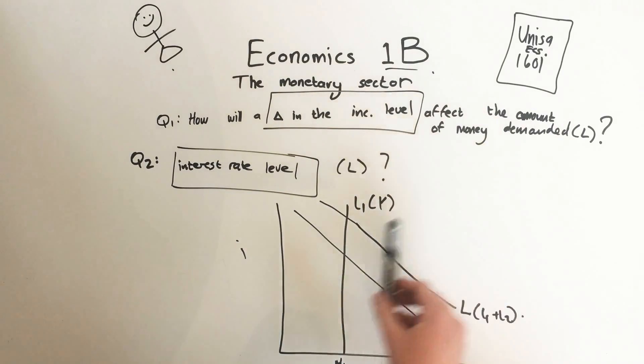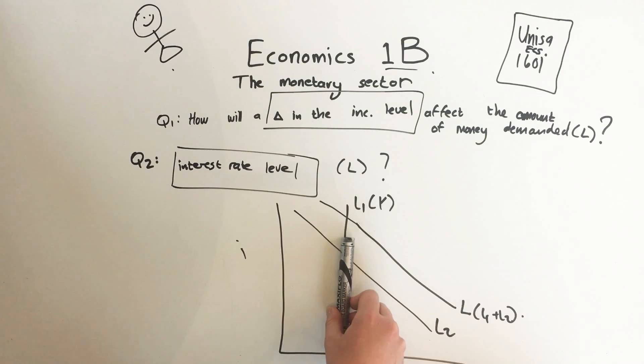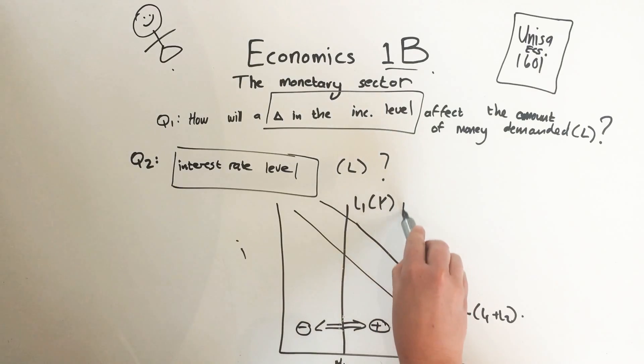Now they're saying: how will a change in the income level affect the amount of money demanded? The income level is this one. If the income level increases, it'll shift to the right. If the income level decreases, it'll shift to the left. Which means that if the income level increases, we will have a new line.